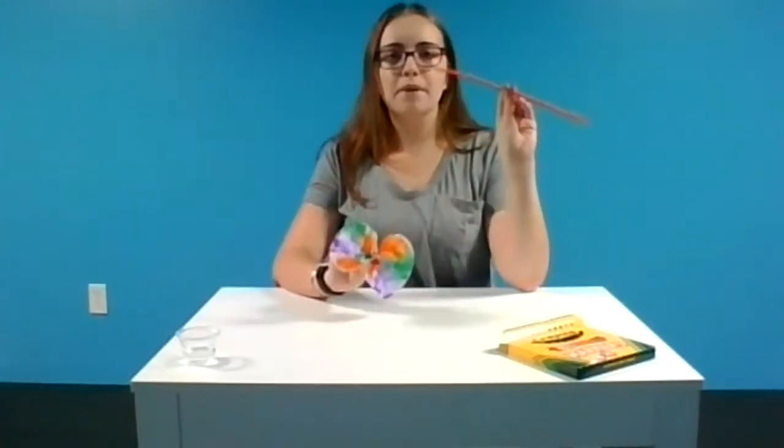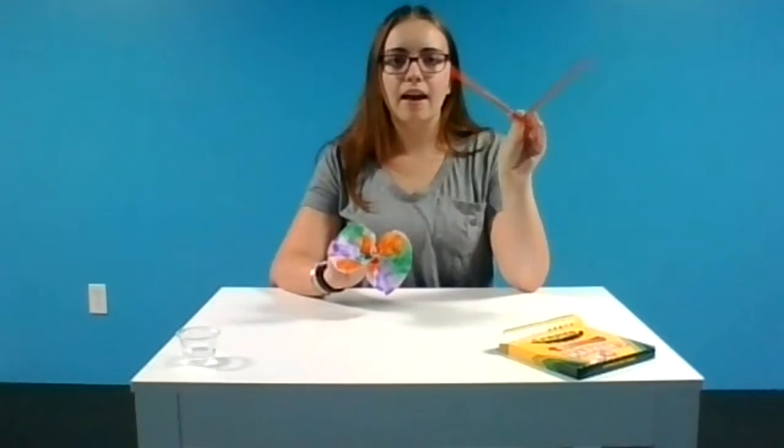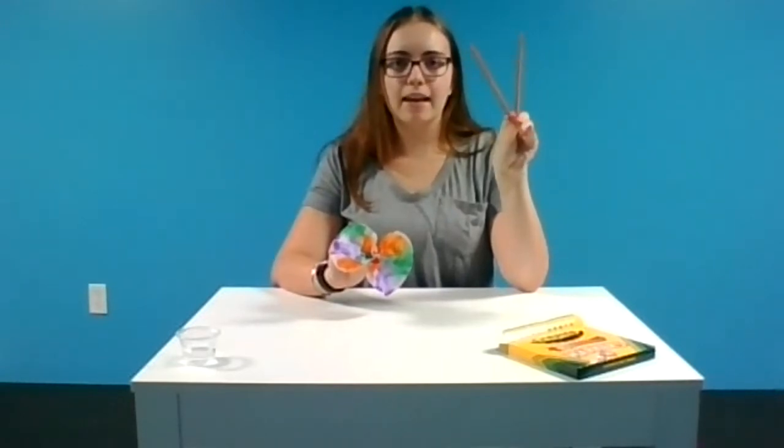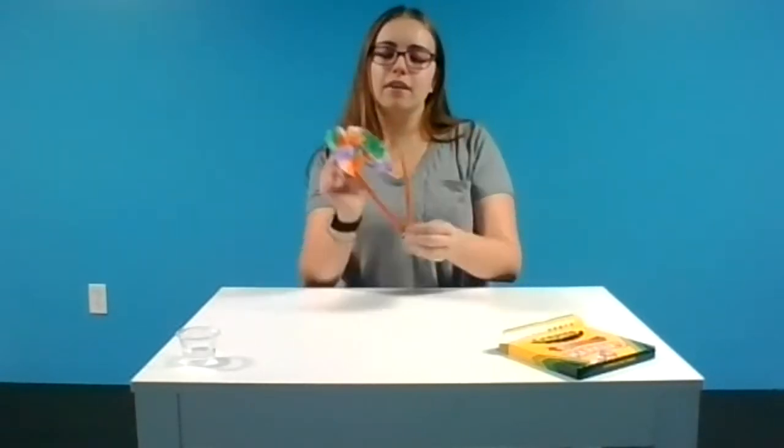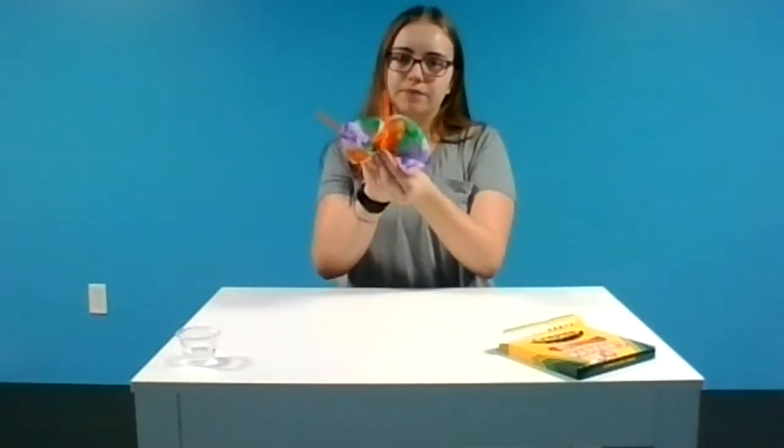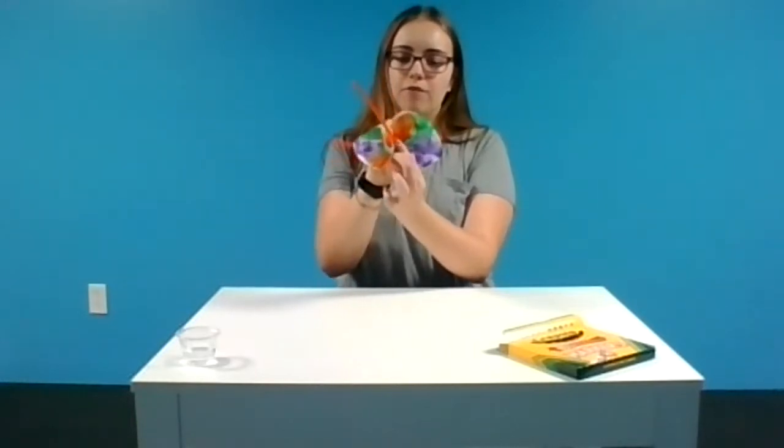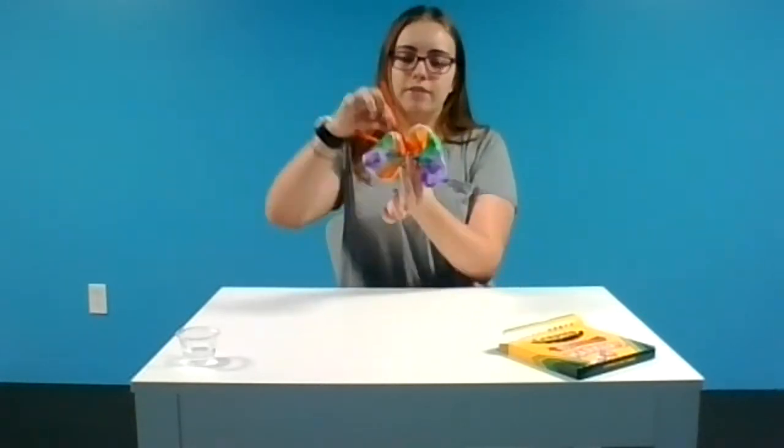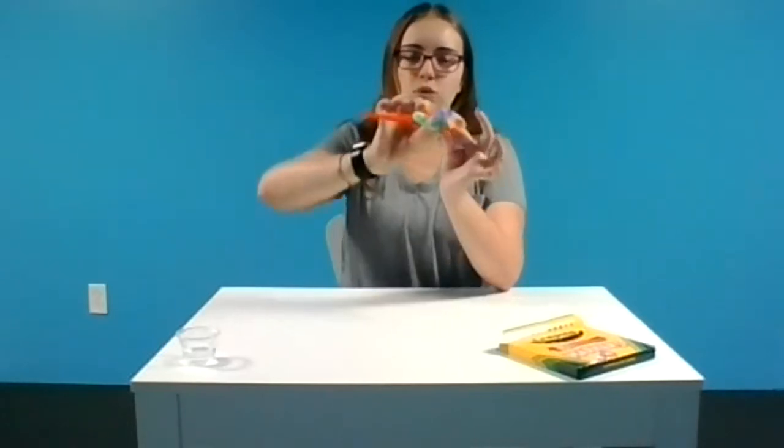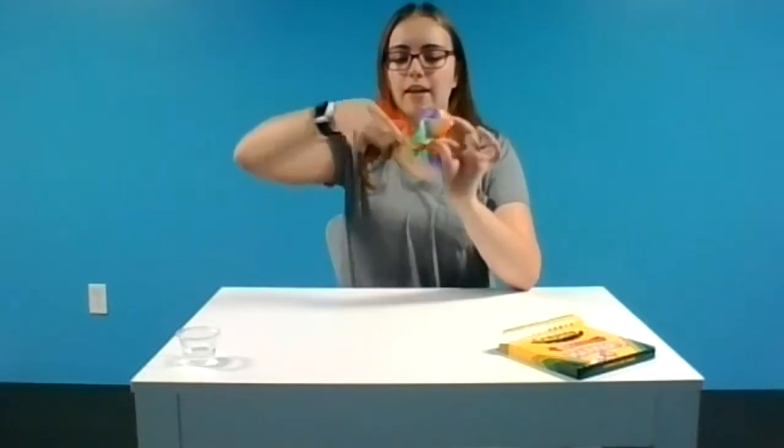Next, you're going to grab your pipe cleaner. Try to find about the middle of it and you're going to fold it in half. Then you're going to place the middle of your pipe cleaner on the middle of where you scrunched up and folded that coffee filter. And then you're just going to twist the two ends of your pipe cleaner together.